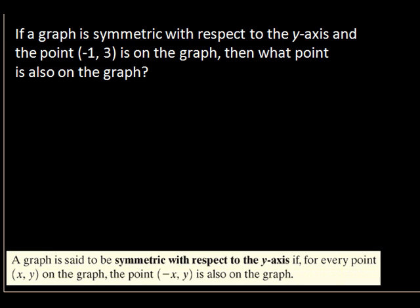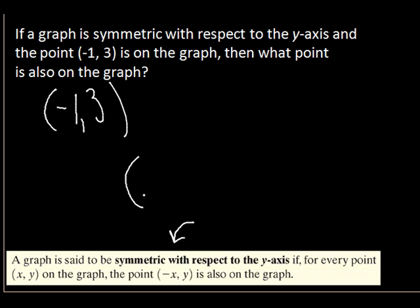If a graph is symmetric with respect to the y-axis and the point (-1, 3) is on the graph, what point is also on the graph? For y-axis symmetry, it's the x-value that changes. So negative 1 becomes positive 1, and the y-value stays the same. The answer is (1, 3).